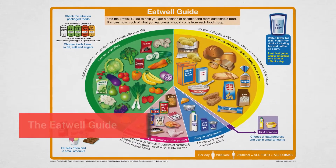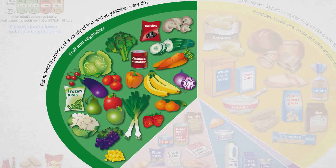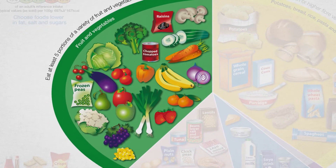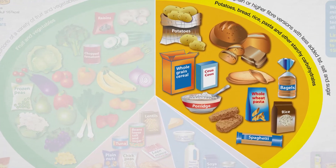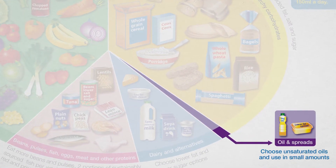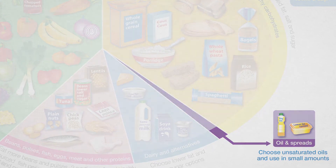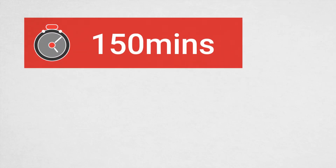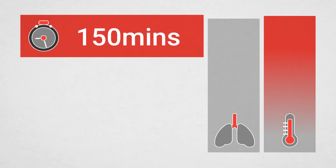The EatWell Guide encourages you to eat at least 5 portions of fruit and vegetables every day, with a higher focus on vegetables. Increasing fibre and whole grain foods while reducing saturated fats can also help you to maintain a healthy weight. Current Physical Activity Guidance advises 150 minutes of moderately intense activity — this is when your breathing rate and body temperature increases.